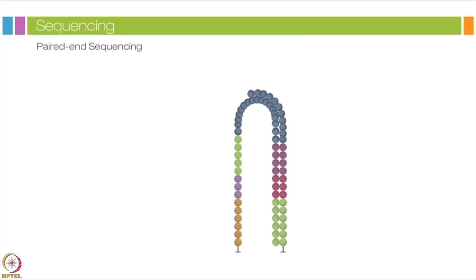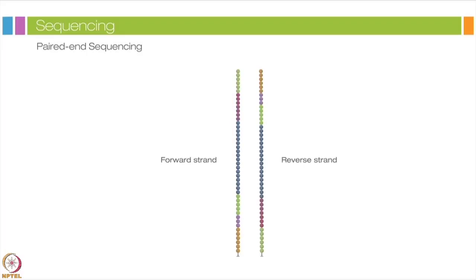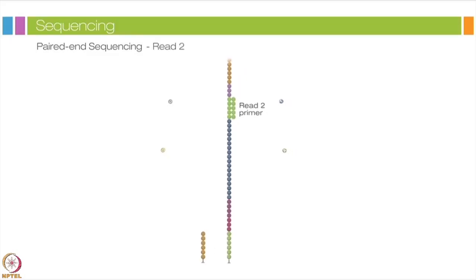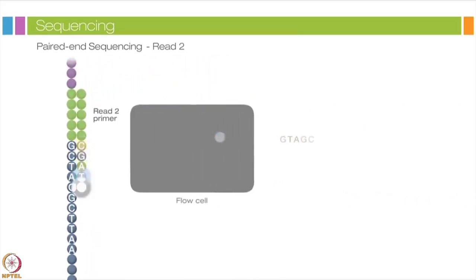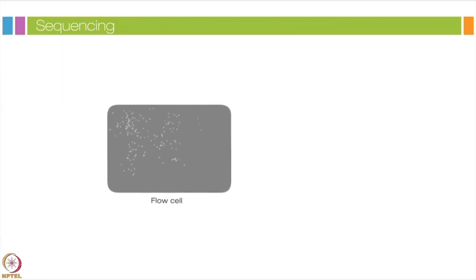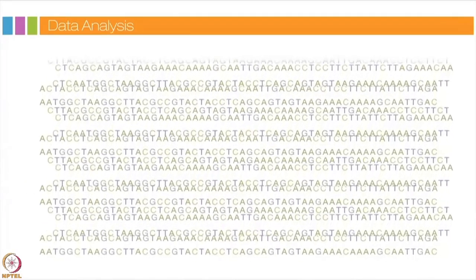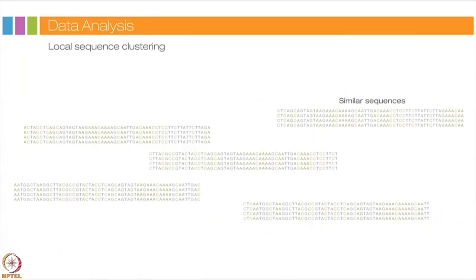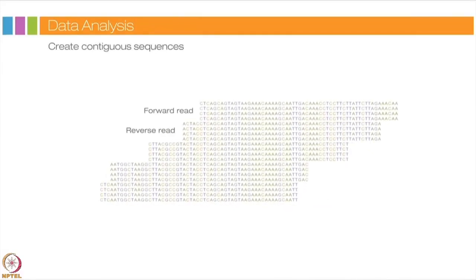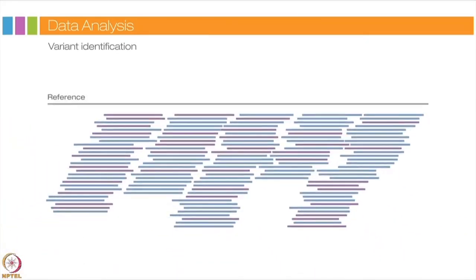After index reads are complete, polymerases extend the second flow cell oligo forming a double-stranded bridge, which is linearized and three-prime ends blocked. The original forward strand is cleaved off, leaving the reverse strand, and read 2 begins. Millions of reads are generated representing all fragments. Pooled sample sequences are separated by unique indices, forward and reverse reads are paired to create contiguous sequences, and these are aligned to the reference genome for variant identification.